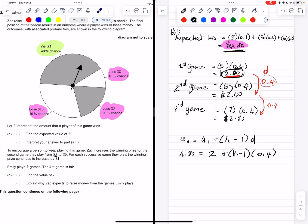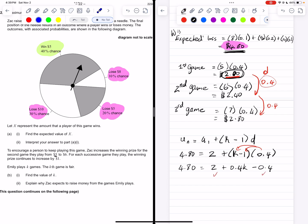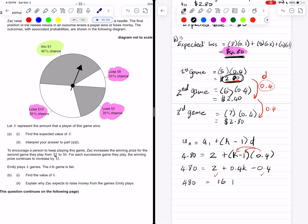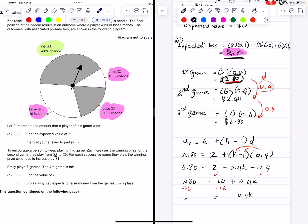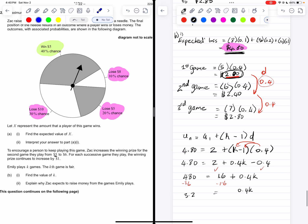From there, we can solve for k, so first, we use the distributive property, and we have 4.80 is equal to 2, plus 0.4k minus 0.4. Now we can subtract 1.6 from both sides, and we get that 0.4k is equal to 3.2, and finally we divide both sides by 0.4, and we get that k is equal to 8. And that tells us that it's on the 8th game that the game will actually be fair.